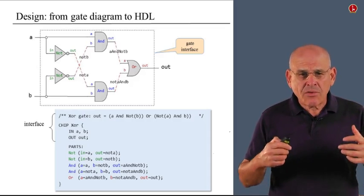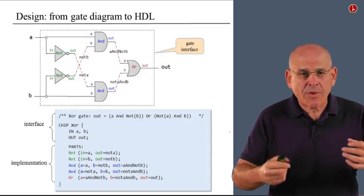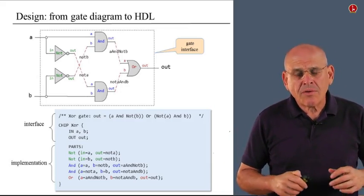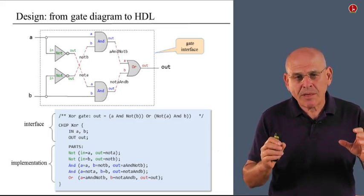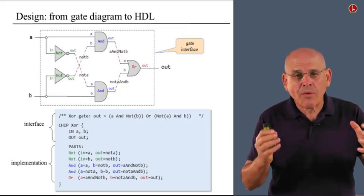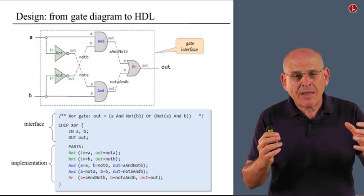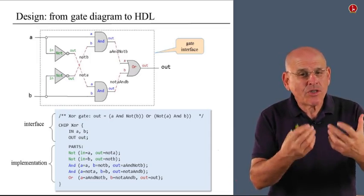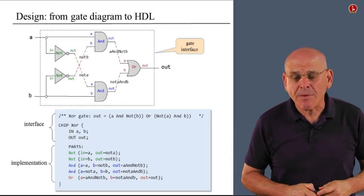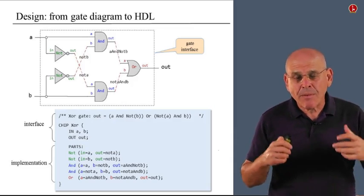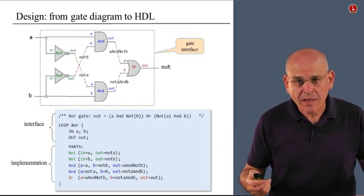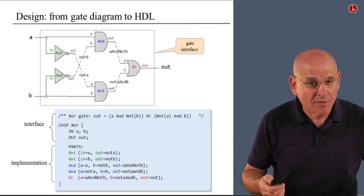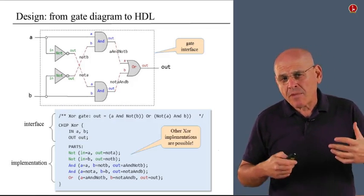Now, I'd like to notice that once again we have interface, we have implementation. And also note that the interface of the chip is unique. There's only one way to describe this chip. This is typically given to us by whoever commissioned us to implement this chip. At the same time, the implementation is not unique. The same interface can be implemented, typically, in many, many different ways.